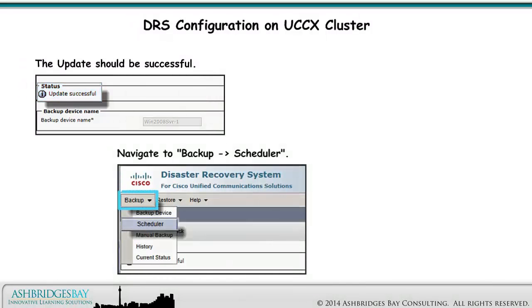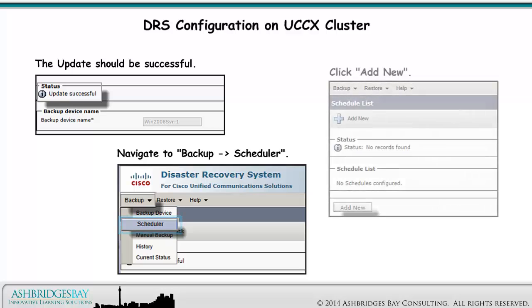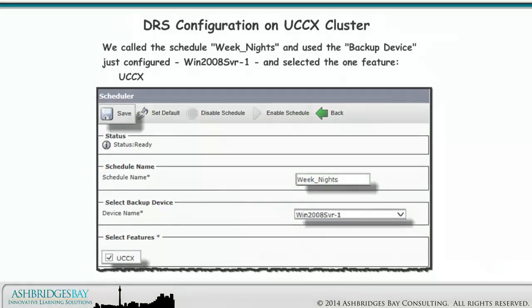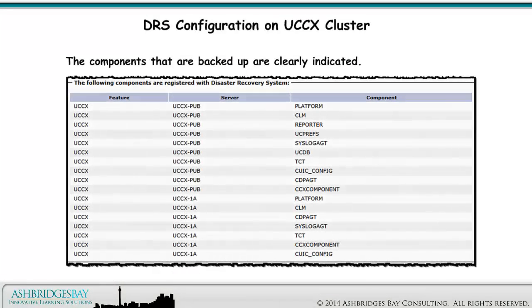The update should be successful. Navigate to Backup > Scheduler. Click Add New. We called the schedule "weeknights" and used the backup device just configured — Windows 2008 Server 1 — and selected the one feature: UCCX. The components that are backed up are clearly indicated.